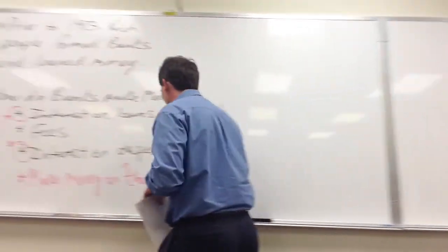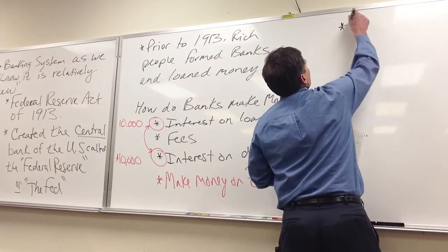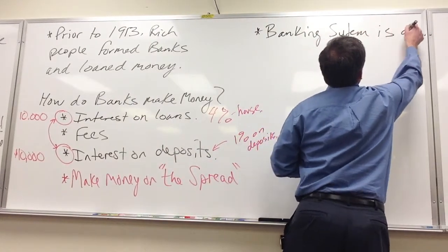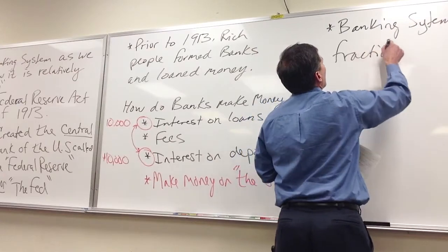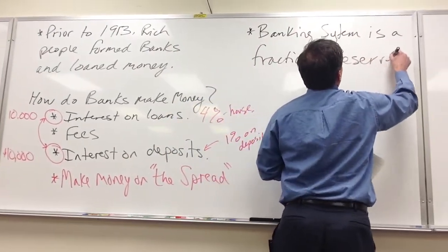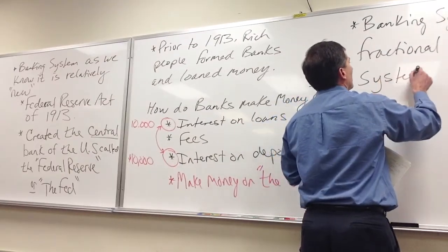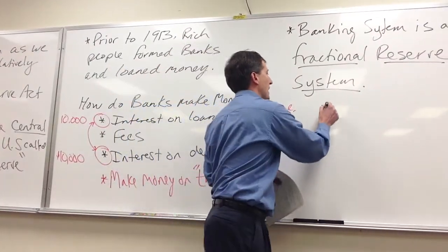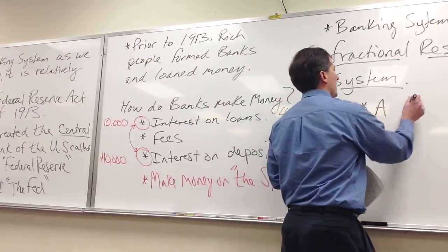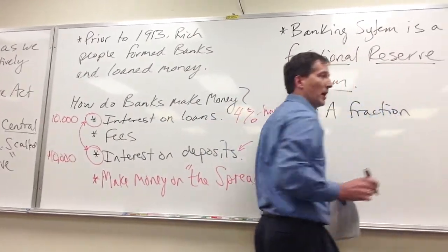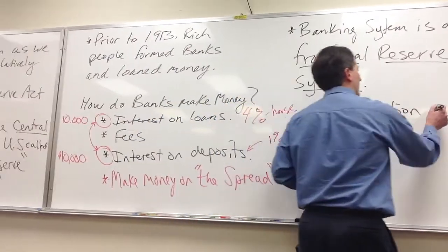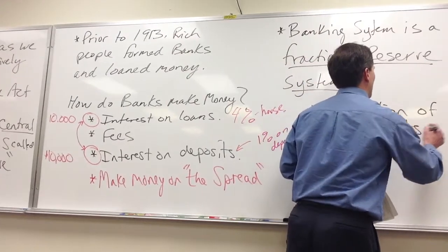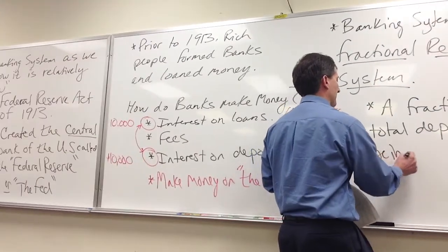This is a fractional reserve system. The banking system is a fractional reserve system — a fraction of deposits, not 100% but something smaller, are being loaned out.